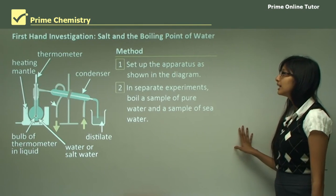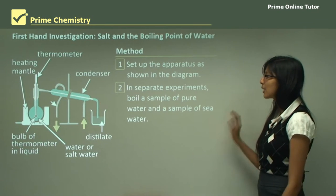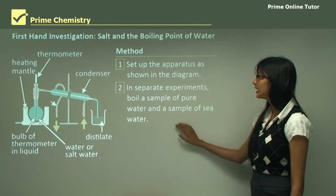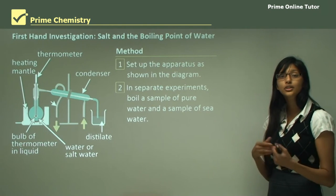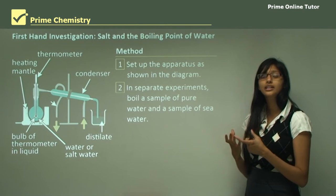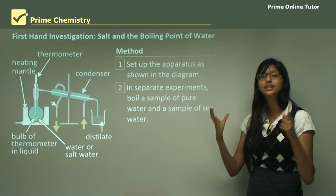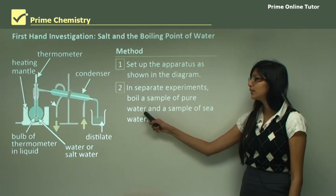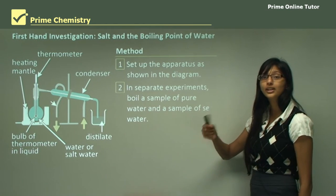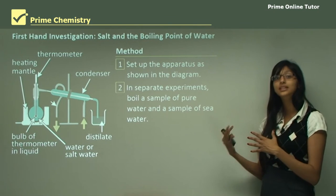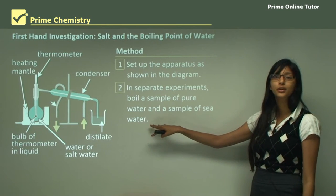In the next step, in separate experiments, boil a sample of pure water and a sample of sea water. We need pure water as a control — in the control you are not changing your variables. In the sea water you are adding salt, so if you boil pure water you find the actual boiling point of water, and then you can compare it with sea water to see whether salt really does affect the boiling point.